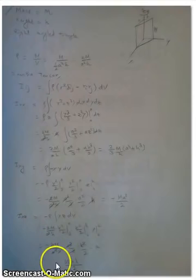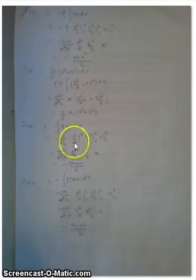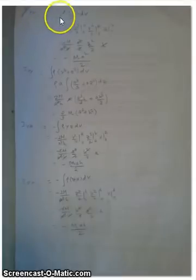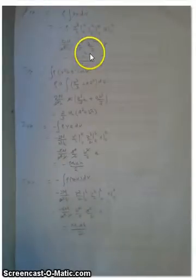Similarly, IXZ would be minus M A H over 2, and IYX would be minus Y X dV, and after integration minus M A square by 2.